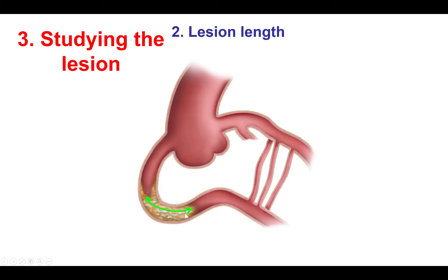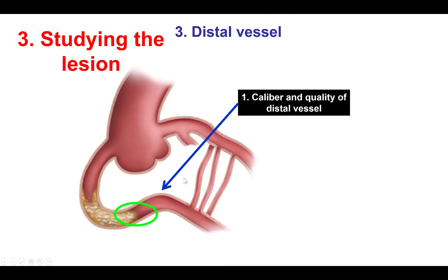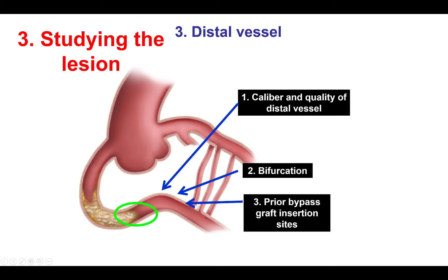Is there calcification, which can make penetration difficult, requiring very stiff penetrating guide wires? Second, we look at the lesion length and composition — is it long or short, is there calcification or tortuosity within the occlusion? Third, we look at the distal vessel, specifically its caliber and quality. In general, the larger the vessel, the easier it is to recanalize. Is there a bifurcation close to the distal cap? If so, we want to enter the vessel proximal to the bifurcation to avoid losing a side branch. Are there any previous bypass graft insertion sites, which can tether or distort the anatomy, making it harder to cross?